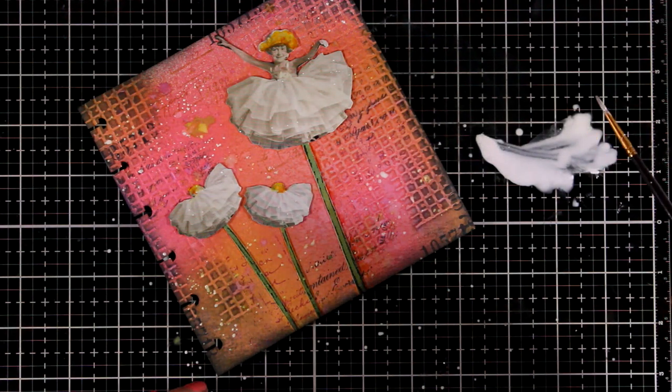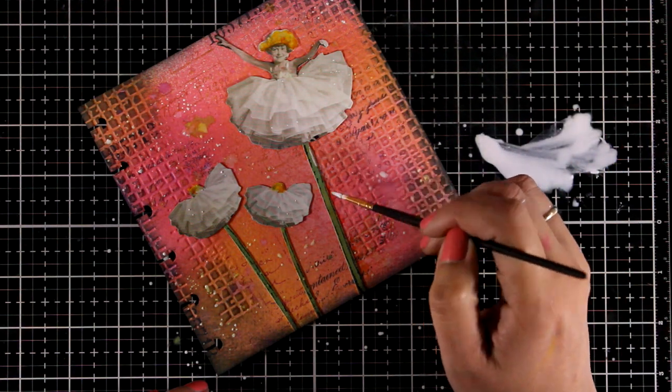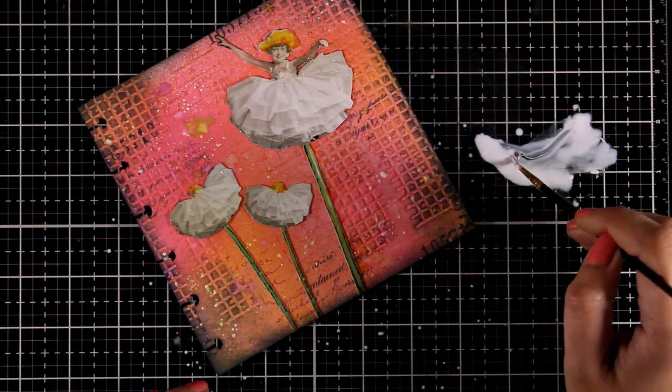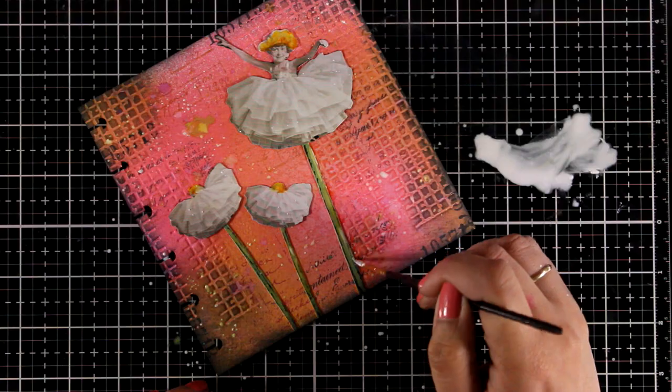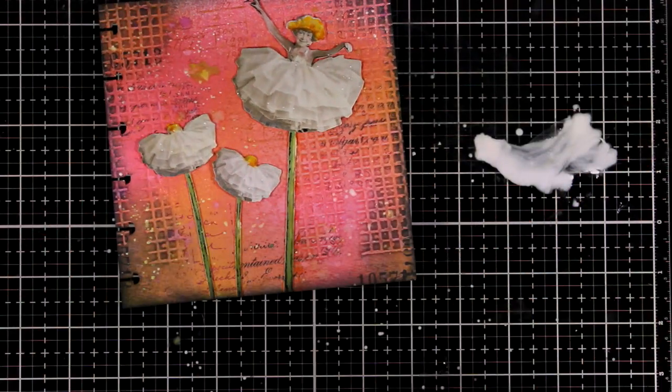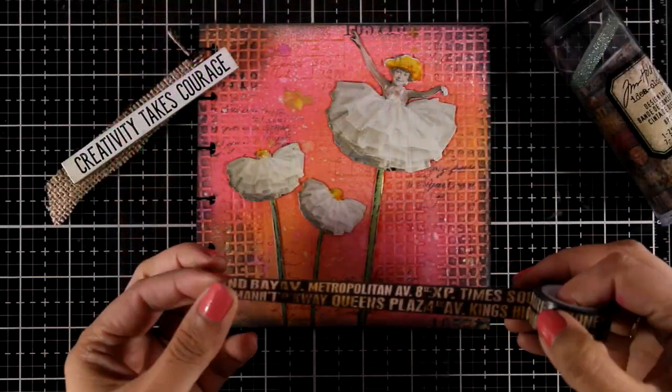Since I have all that gesso laying around, I'm going to use my brush and add some highlights along the stems. Again, this is going to turn into light green as it reacts with the water underneath and it's going to create a lovely highlight.